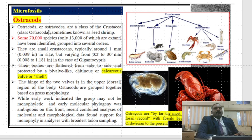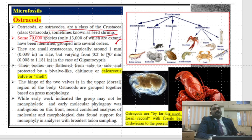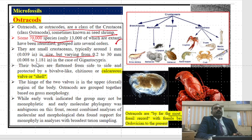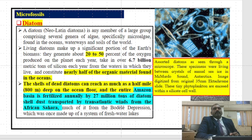Ostracodes are another microfossil. Ostracodes are a class of crustaceans — class Ostracoda — sometimes known as seed shrimp. Some 70,000 species have been described, of which only about 13,000 are extant, and have been identified and grouped into several orders. They are small crustaceans, typically around 1 mm or 0.039 inches in size, but varying from 0.2 to 30 mm.